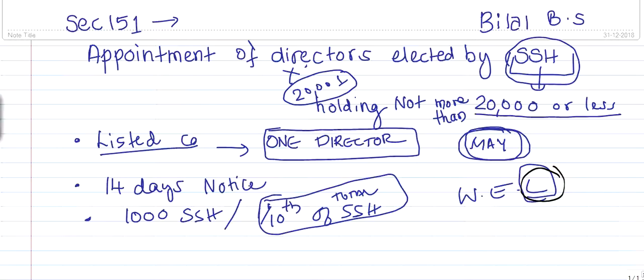The proposed director must provide: his DIN, a declaration of not being disqualified, his name and address, shares held in the company, and his consent. This is the standard procedure for proposing a small shareholder director.